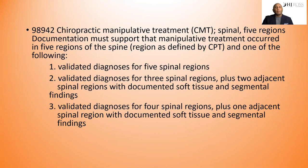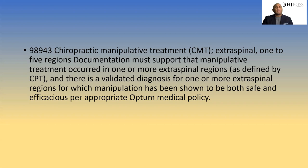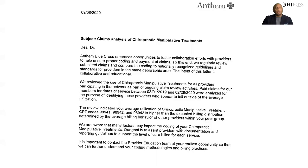Where we have to be careful is when we distribute the ratio — are we setting up a red flag? 98943 doesn't really create that issue because it doesn't matter the number of regions. The key factor with extra spinal is: did you have an extra spinal complaint and an extra spinal finding that would document the need for a manipulation service?